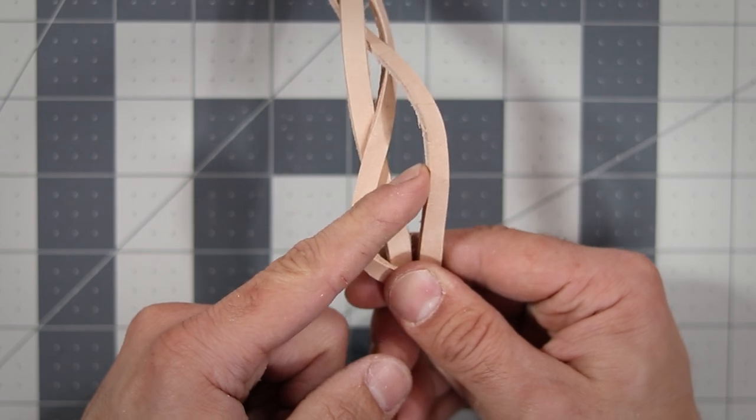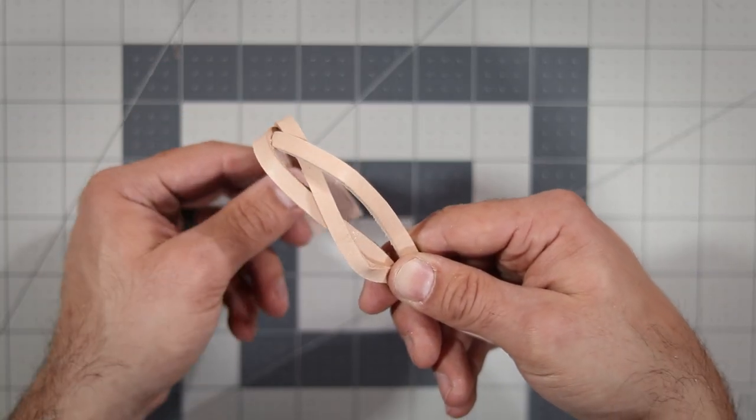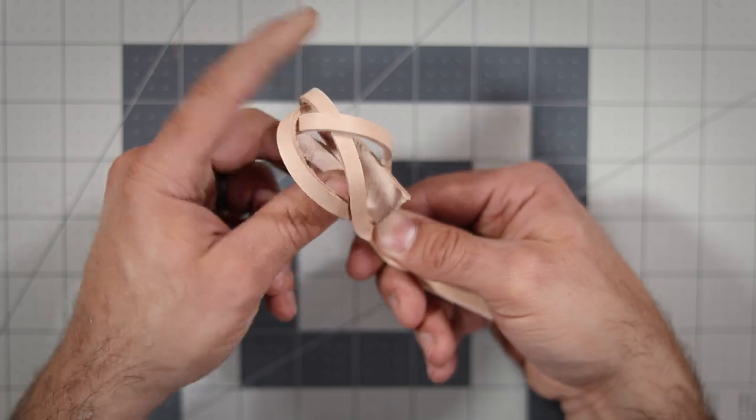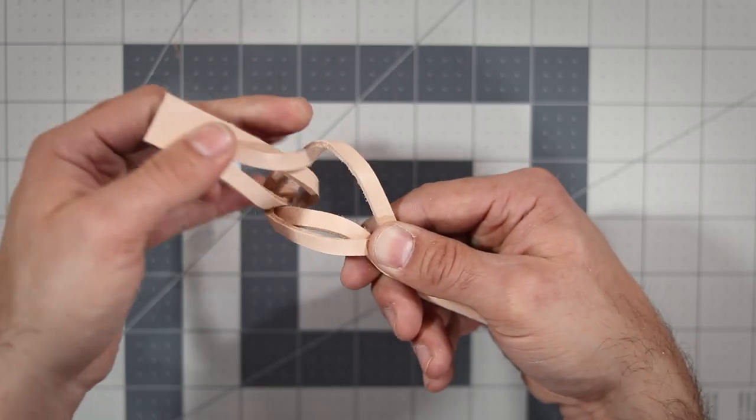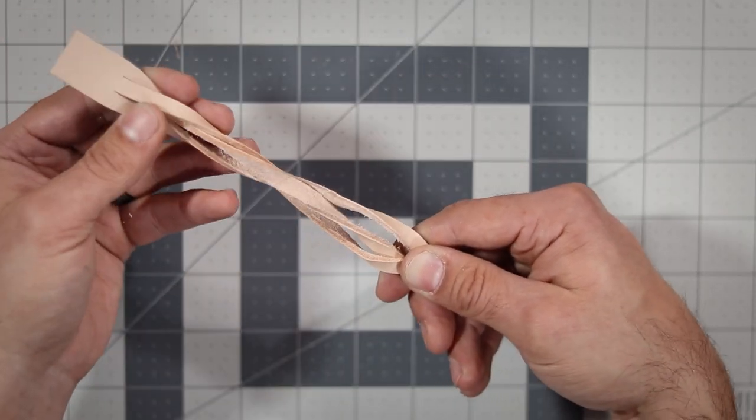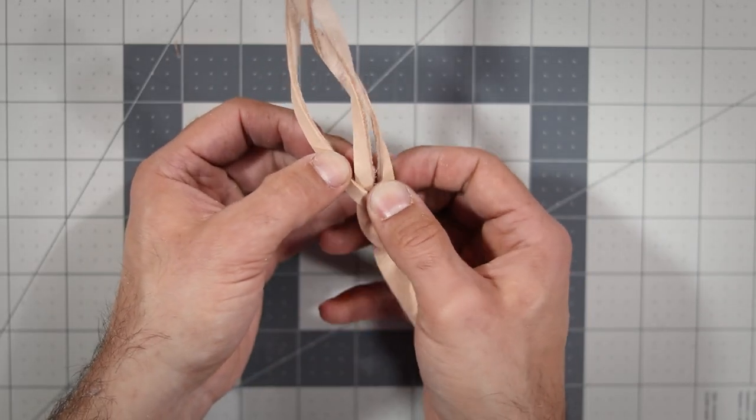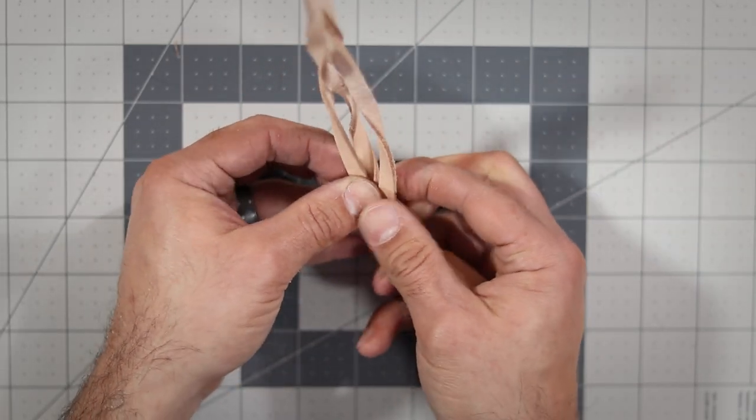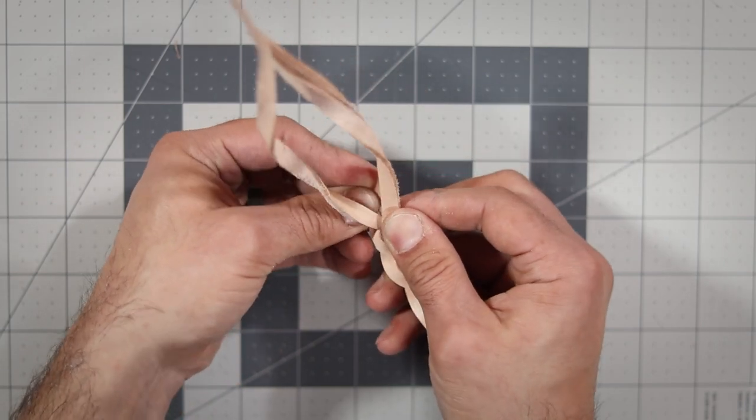To continue and unwind that a little bit, we need to pass it between the center and right strip. Just simply fold it back and through that space. Now it's going to make everything really twisted, but no worries. We're going to fix that in a minute. First, we need to make two more passes. The right, and then the left, just like before.